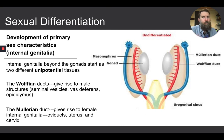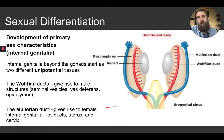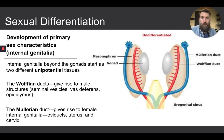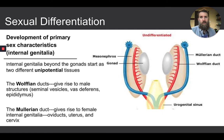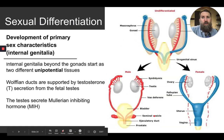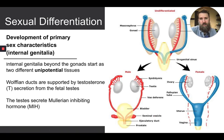Unlike the gonads, which are bipotential, there are two different types of unipotential tissues present in the embryo that can only develop into one type of tissue. There are the Wolfian ducts, illustrated in red, which eventually give rise to the seminal vesicles, vas deferens, and epididymis. And the Mullerian ducts, which eventually give rise to the female internal genitalia — the oviducts, uterus, and cervix. What determines which one develops is largely hormonally driven.